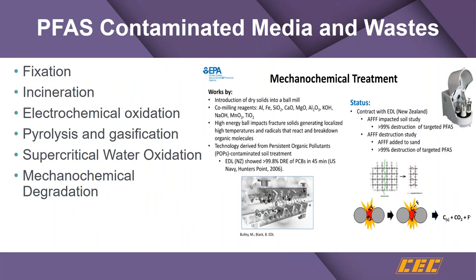EPA is looking at some other approaches — one is a mechanochemical treatment, sort of a milling operation used in mining with some additional co-milling agents. Just the high pressure of the milling can actually destroy some of the PFAS constituents.